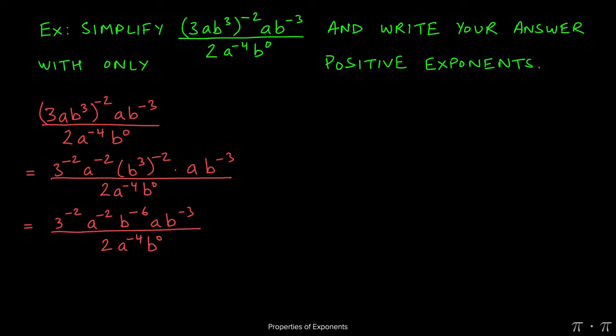At this stage, we can combine some of the terms together in the numerator. So the 3 to the negative 2 will stay at the beginning. There are no other constants. However, these two a's can be glued together. So a to the negative 2 times a can be placed in the middle here. And then outside of the flanks, we can write b to the negative 6 times b to the negative 3 together. Note that the denominator does not change. It just comes along as it is.